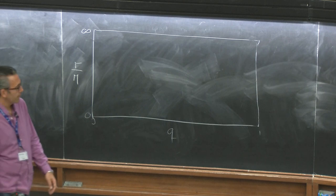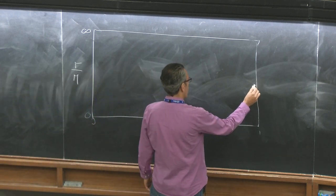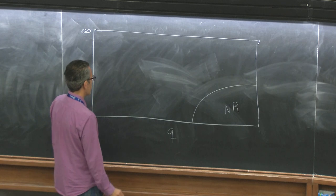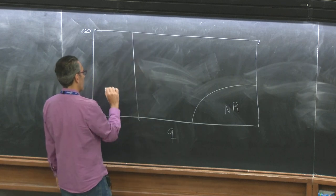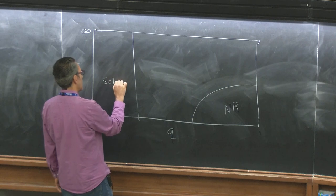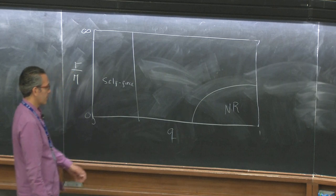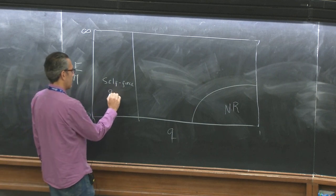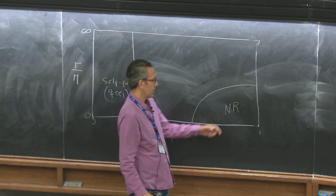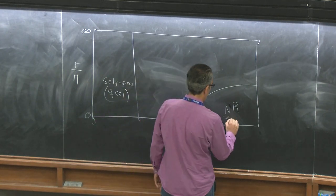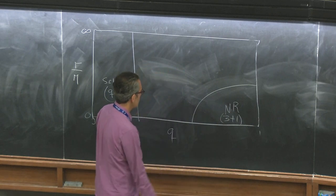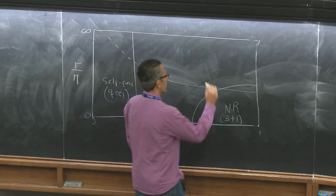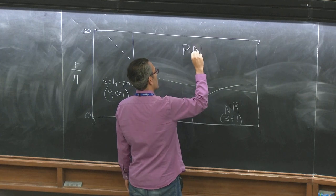What I told you before was that there's some regime where numerical relativity works quite well, and then there is this regime where self-force methods, or black hole perturbation theory as it's sometimes called, works really well — here you're expanding in q much less than 1. Here you're just doing a 3+1 decomposition. And then there's this regime somewhere around here where post-Newtonian methods work very well.